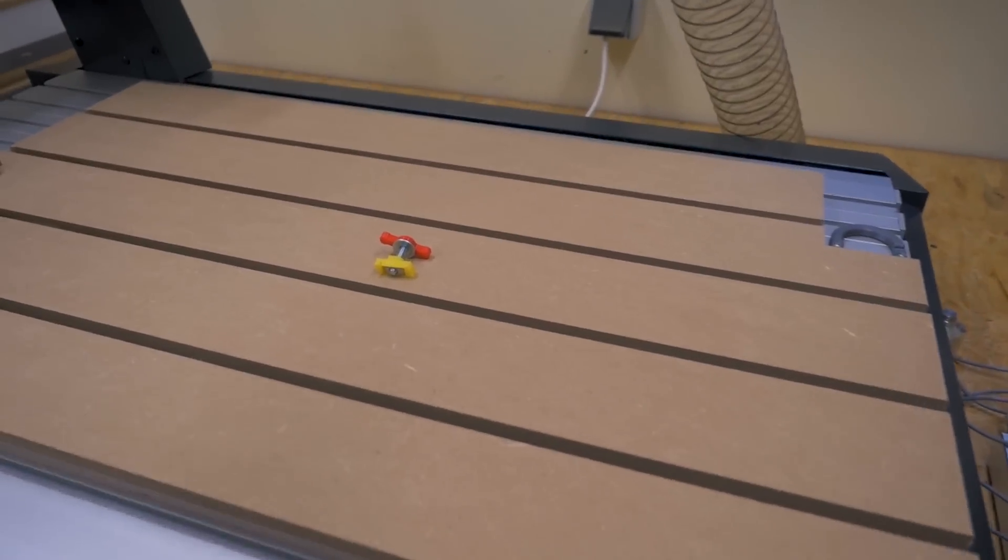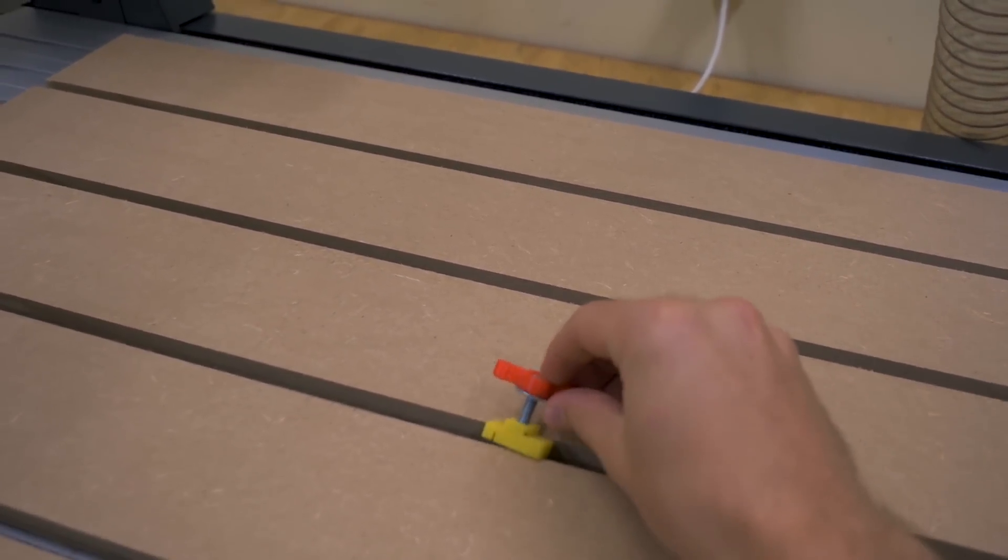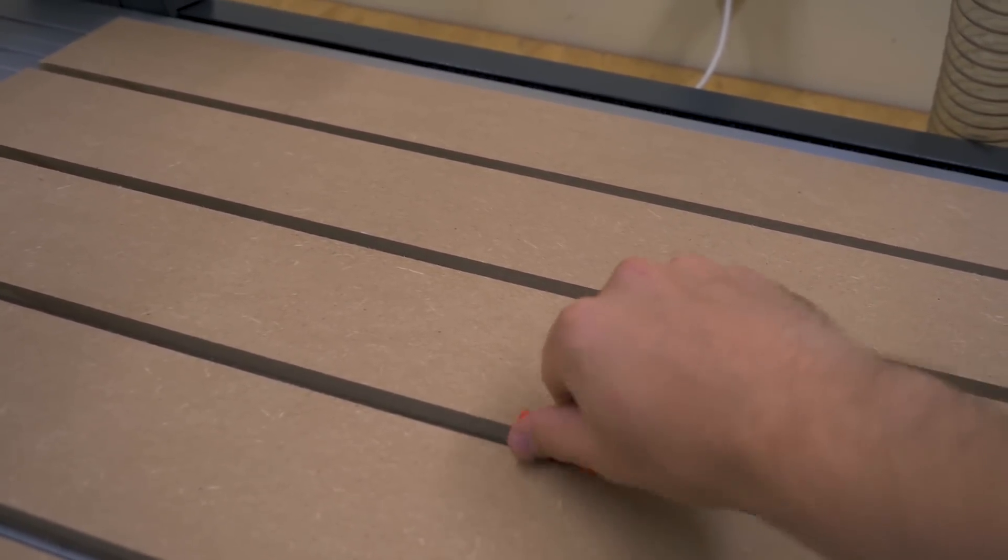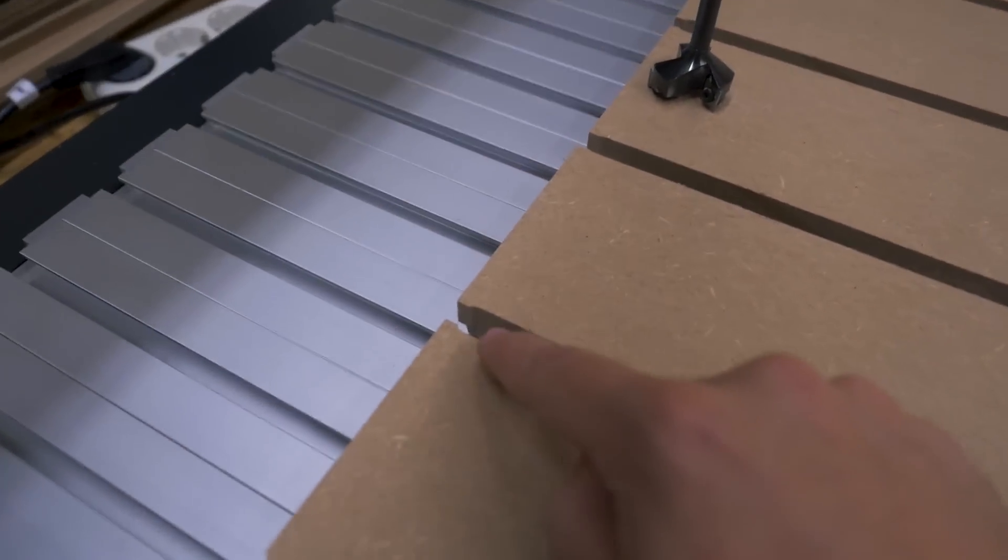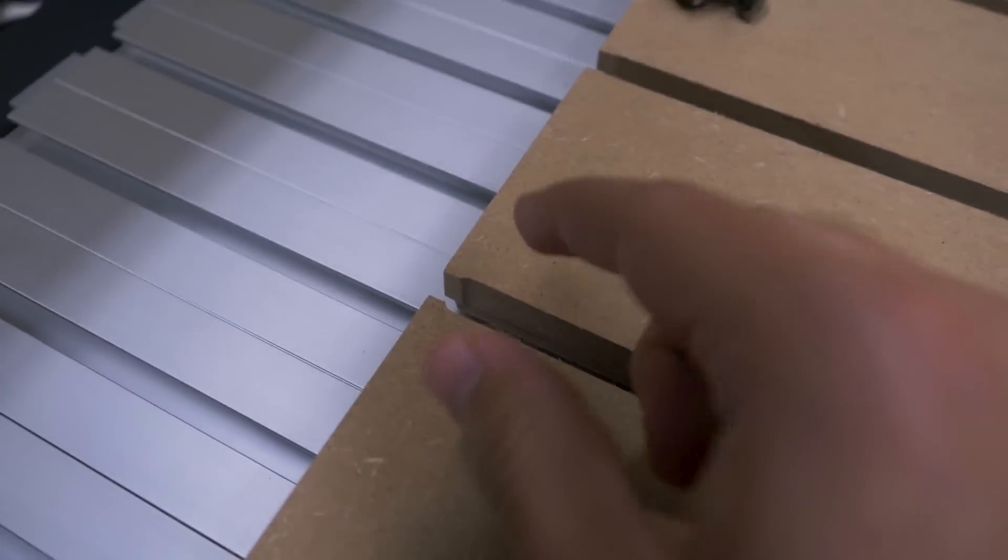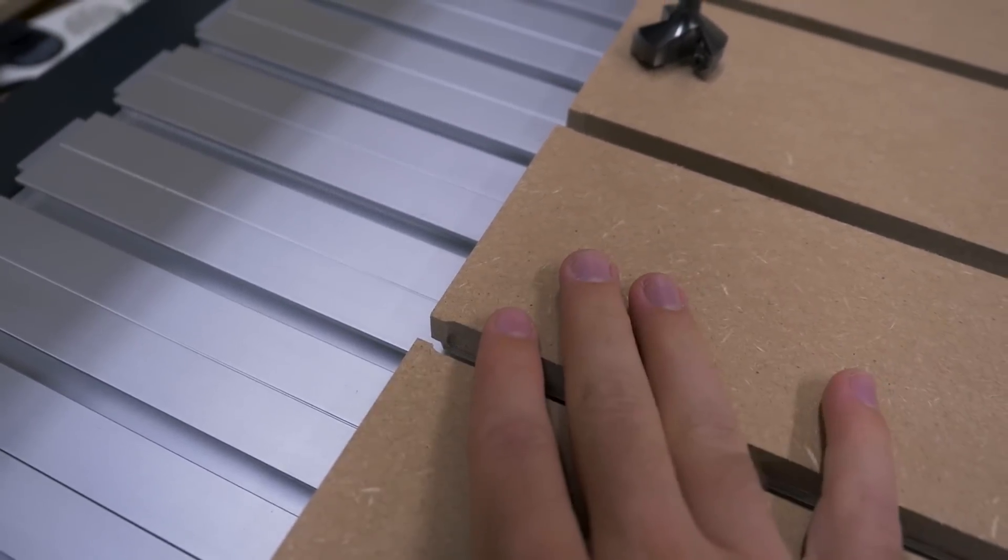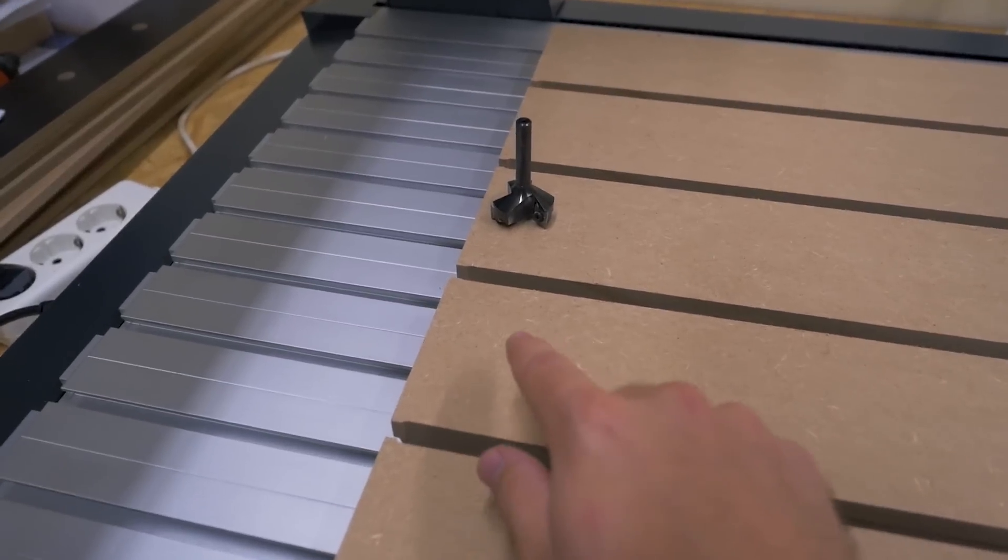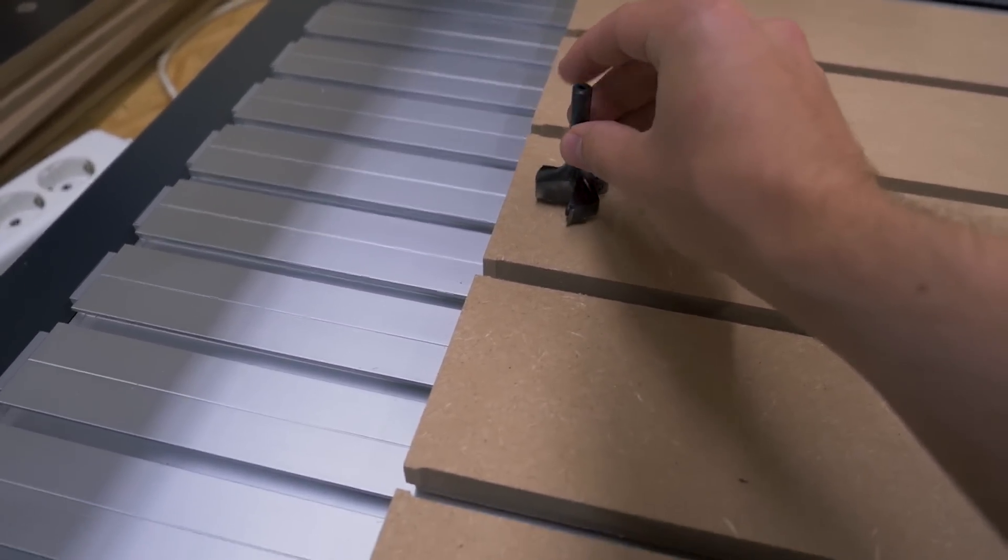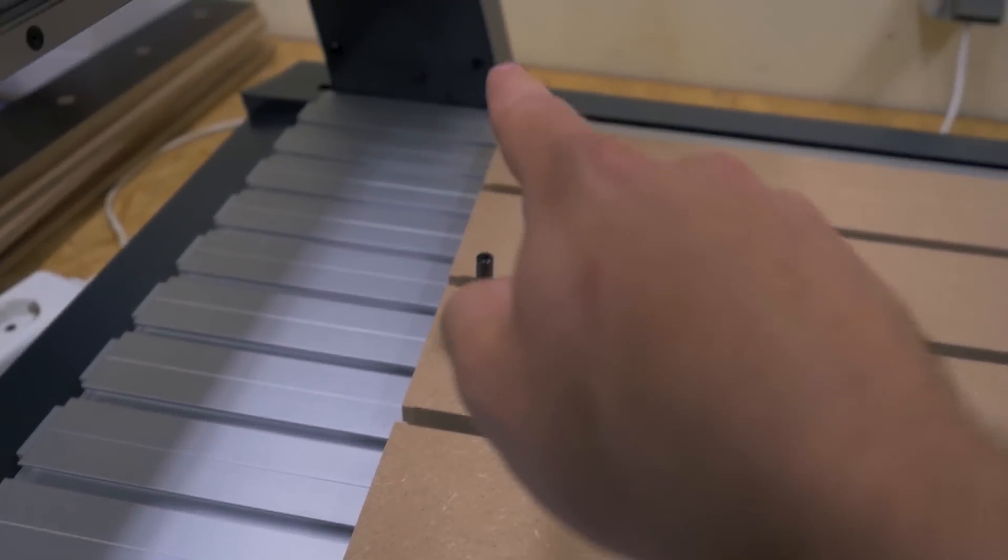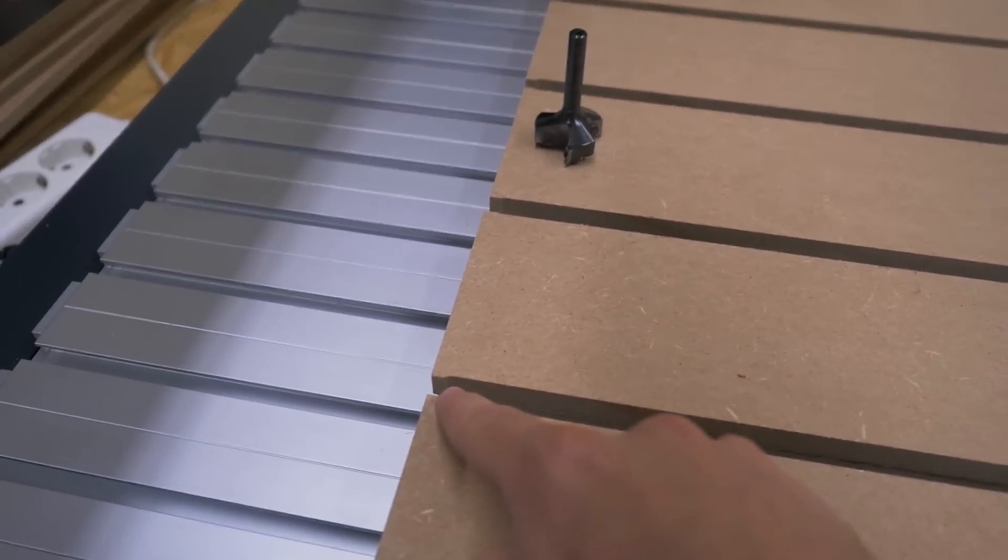The slots are done and my homemade T-nuts also fit nicely in there. Unfortunately though I couldn't reach every spot because the spoilboard is actually a little bit too long and I didn't think that would be a problem because I can reach all the spots with the surfacing bit. But not with an eight millimeter end mill to cut the slots.